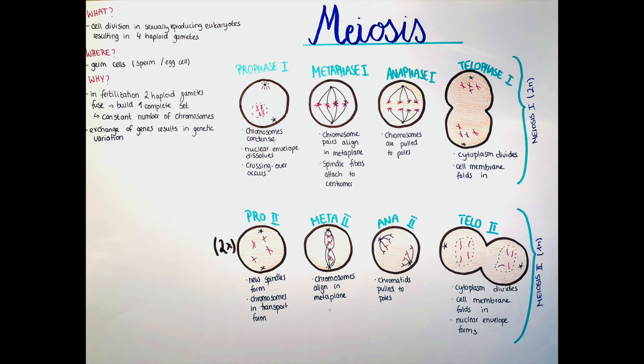So in prophase II, again the new spindles form. The chromosomes are still in the transport form, so in this X shape. And the spindle fibers then in metaphase II will elongate and will attach to the chromosomes and will pull the sister chromatids away from each other in anaphase II. It's the same mechanism as in mitosis or in meiosis I.